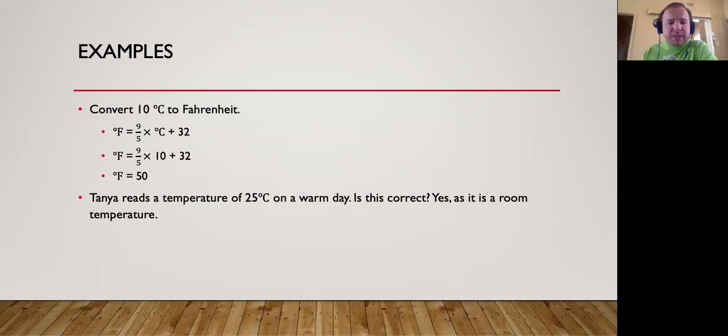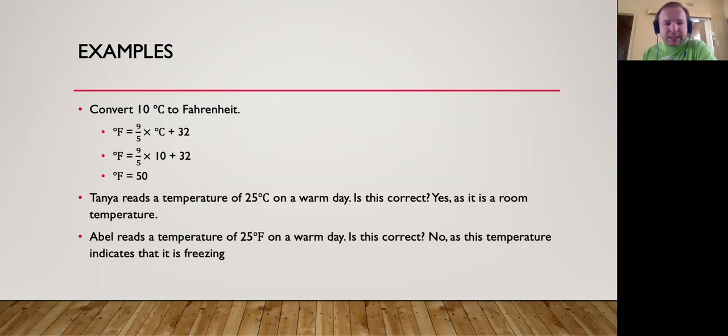But let's say I give you the same situation where it's 25 degrees Fahrenheit instead of degrees Celsius on a warm day. We know that 32 degrees Fahrenheit is actually freezing point, which means 25 degrees Fahrenheit is actually freezing. It's actually below freezing point which means that this would be an unacceptable reading because it is actually freezing.